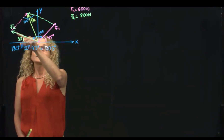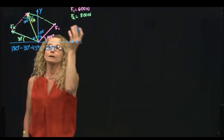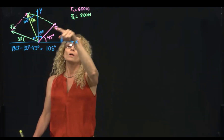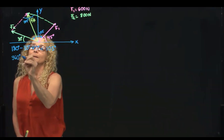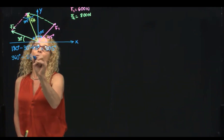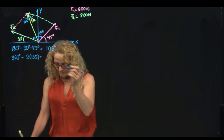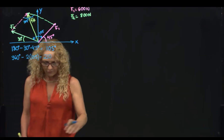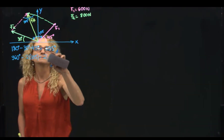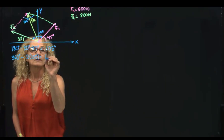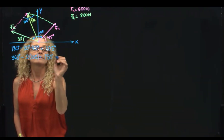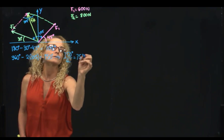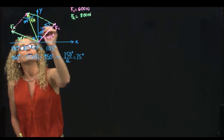You recall also that a parallelogram has 360 degrees as the sum of all angles. So we have 360 minus 2 times 105. That gives me 150. If I divide that by 2, it gives me 75 degrees. So this angle over here is 75.